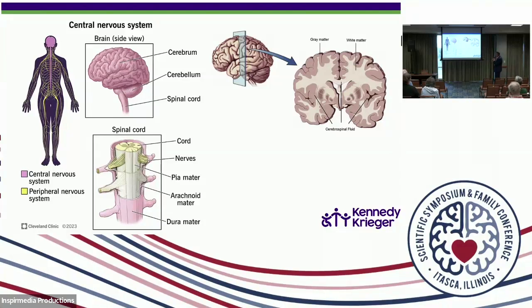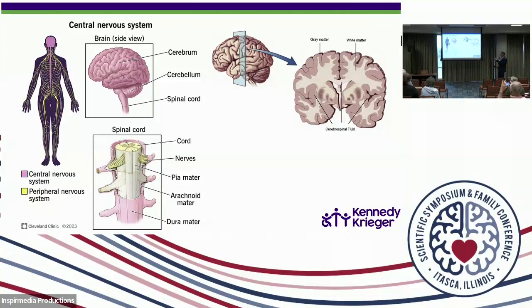There are also deeper brain structures that matter to some leukodystrophies. For example, HABC — hypomyelination of basal ganglia and cerebellum — is a disease involving the deep gray matter structures. These are evolutionarily preserved: a mouse brain has almost as complex deep gray matter structures as a human. What the mouse is missing is the vast cortical surface. We have brain folds to maximize the space used by nerve cells.